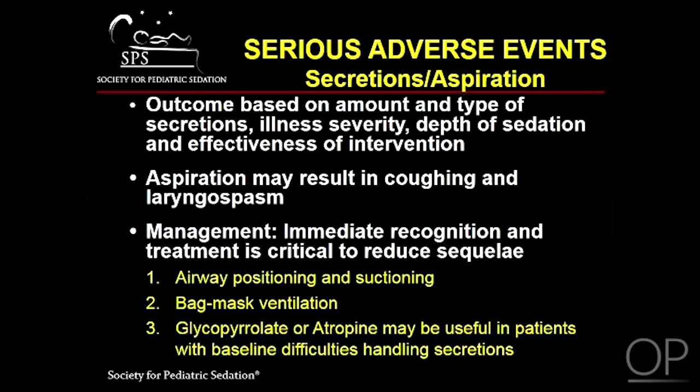Early recognition and management of excessive secretions is key for successful treatment. Clinical outcome will vary based on the amount and type of secretions, illness severity, depth of sedation, and timeliness of intervention. An important consideration is prevention of secretion aspiration into the larynx, which may result in coughing and laryngospasm — a much more severe condition. Treatment involves airway positioning and suctioning, followed by bag mask ventilation if needed. Glycopyrrolate or atropine may be helpful in patients who have trouble with their own secretions.